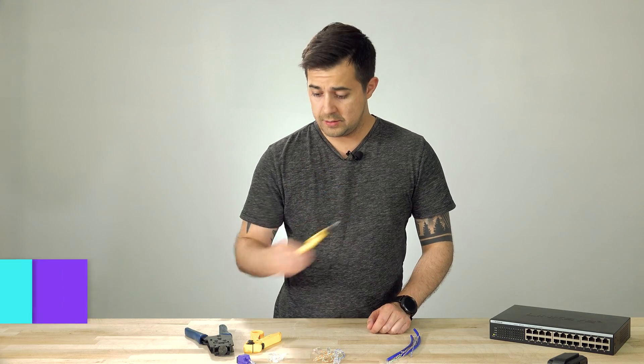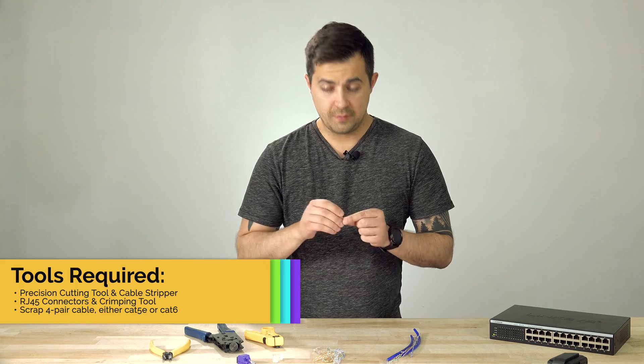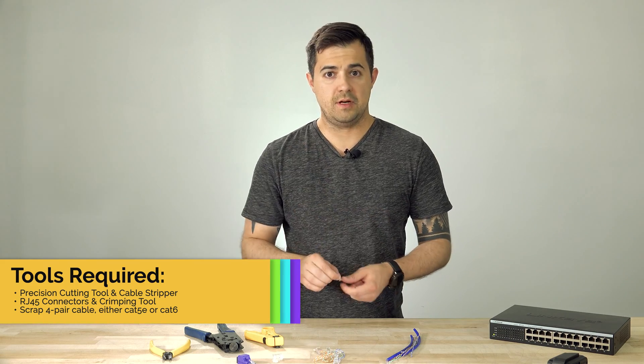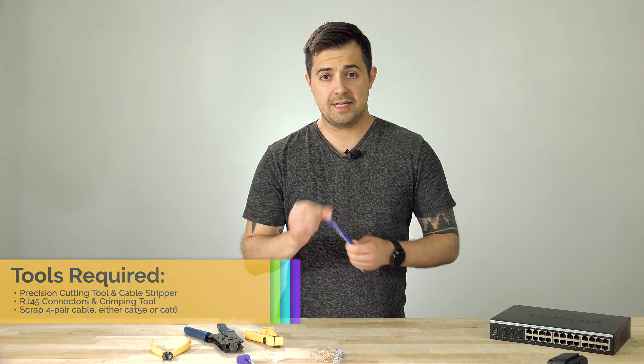For the tools, you're going to need a pair of cutters, a stripping tool, a crimp tool, one connector. I recommend using one with load bars, makes the process so much simpler, and some scrap patch cable that we'll need to take the conductors out of.